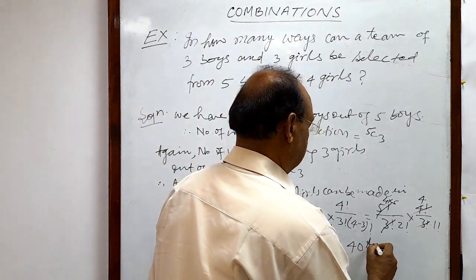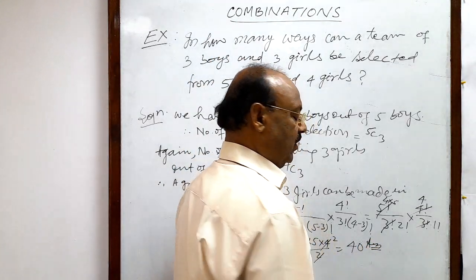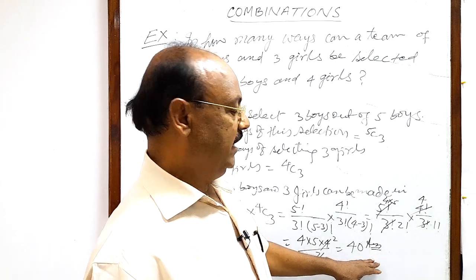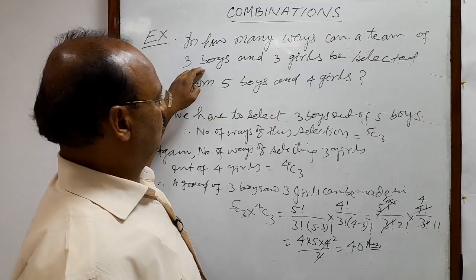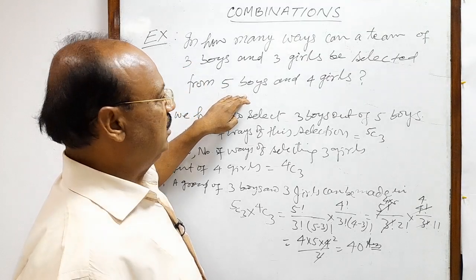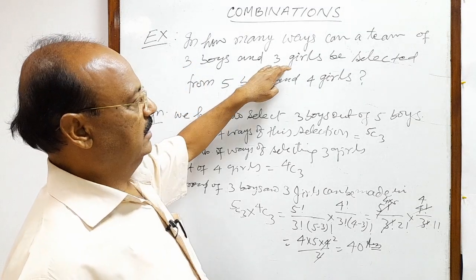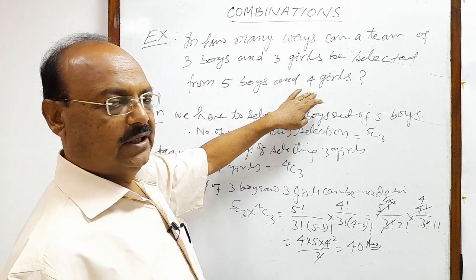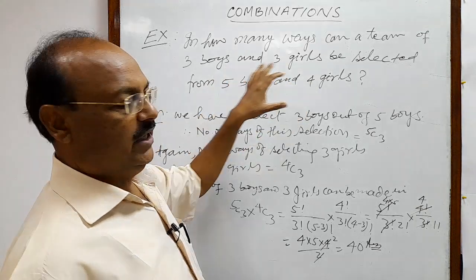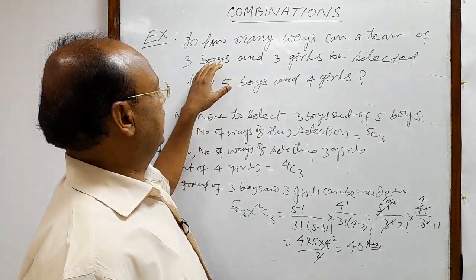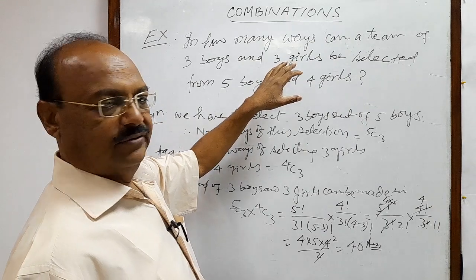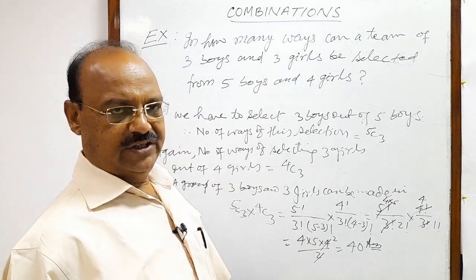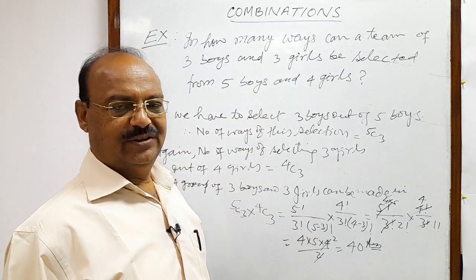So 40 is the total number of ways of selecting three boys out of five boys and three girls out of four girls, meaning making a group of three boys and three girls. I hope you have understood it. Thank you.